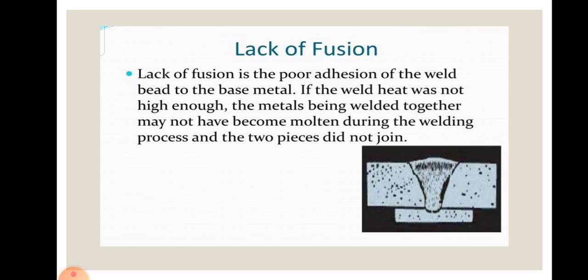The first one is lack of fusion. If the molten metal does not mix properly with the base metal, the defect is called lack of fusion or incomplete fusion. Lack of fusion is the poor adhesion of the weld bead to the base metal. If the weld heat was not high enough, the metals being welded together may not have become molten during the welding process, and the two pieces did not join.